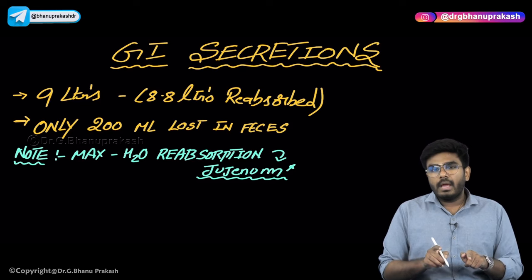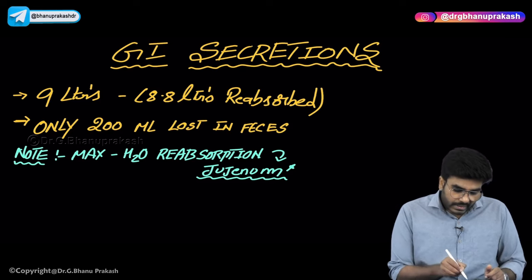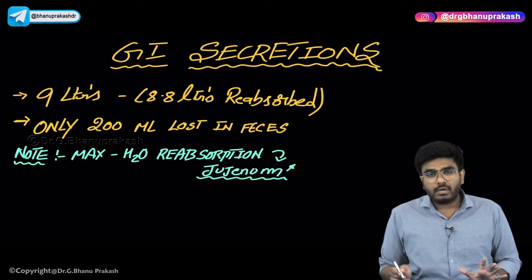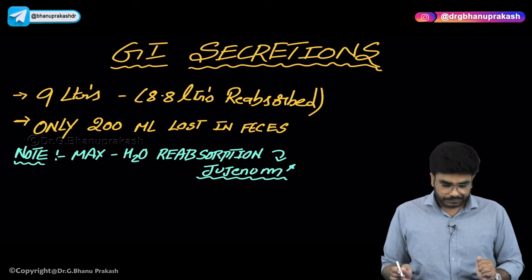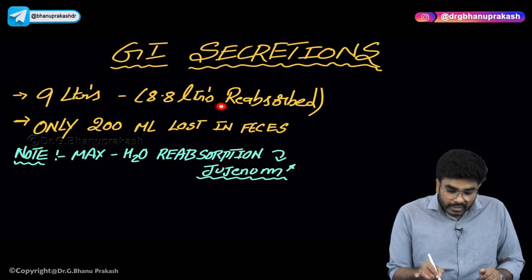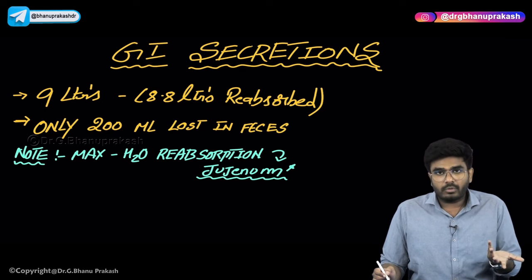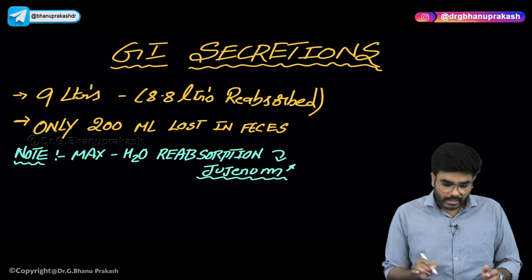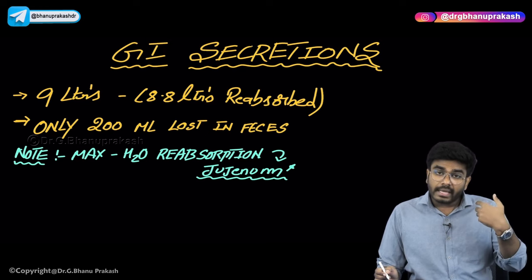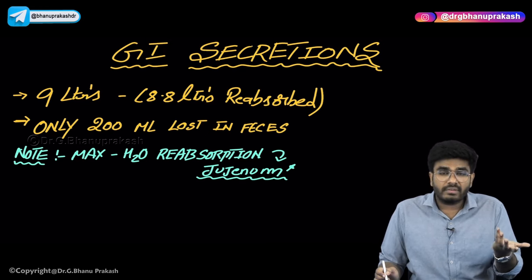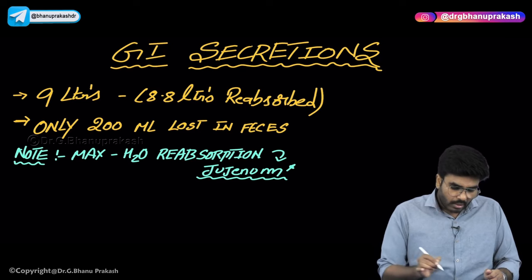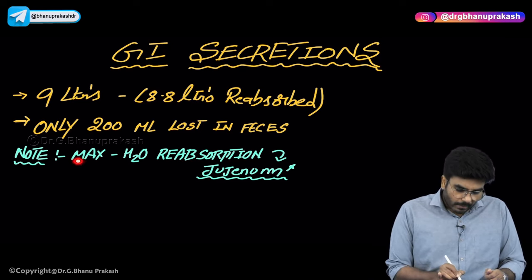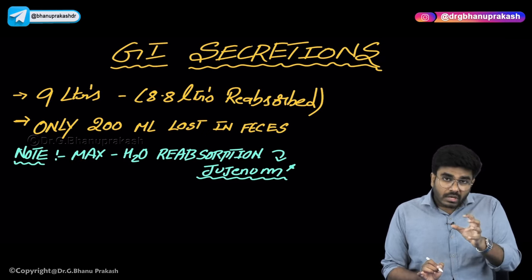If you totally count all the secretions, they account for almost 9 liters. Nine liters of secretions happen every day in your GIT - in a 24-hour span. But out of these 9 liters, almost 8.8 liters, which means almost 99%, is getting reabsorbed back. Most of the secretions are reabsorbed. Otherwise, if 9 liters of secretions came out, the person would suffer with diarrhea and die. Only 200 ml is lost in the feces.